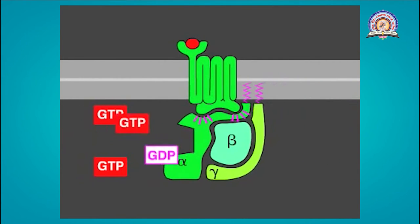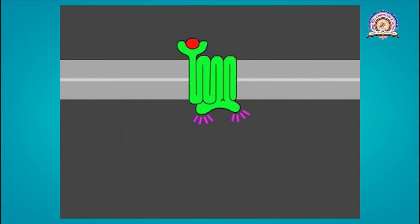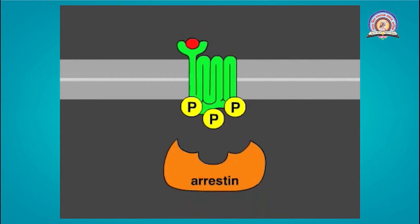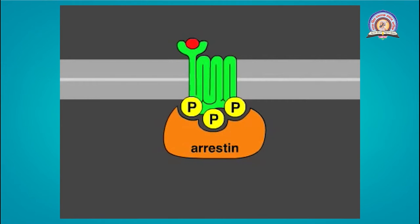Upon prolonged stimulation, receptors eventually inactivate even if their activating ligands remain bound. A receptor kinase phosphorylates the cytosolic portions of the activated receptor. Once phosphorylated, the receptor binds with high affinity to an arrestin protein, which inactivates the receptor by preventing its interaction with G-proteins. Arrestins also act as adapter proteins and recruit the phosphorylated receptors to clathrin-coated pits, from where the receptors are endocytosed. Afterwards, they can either be degraded in lysosomes or activate new signaling pathways.